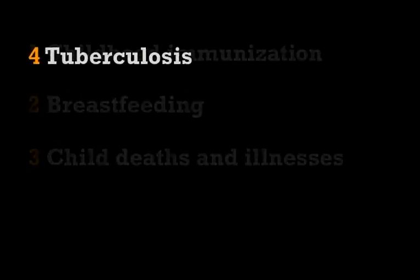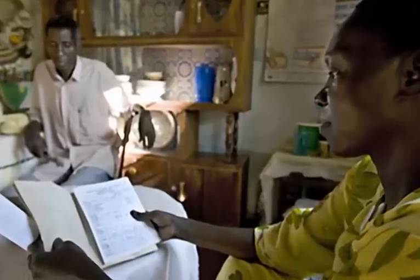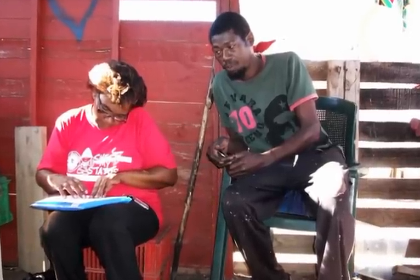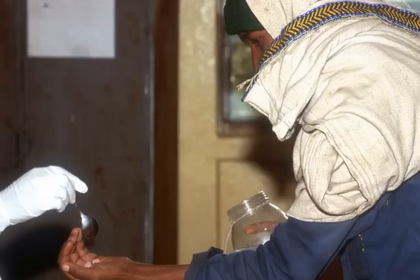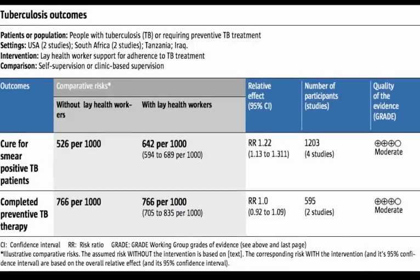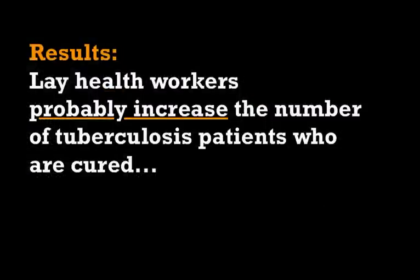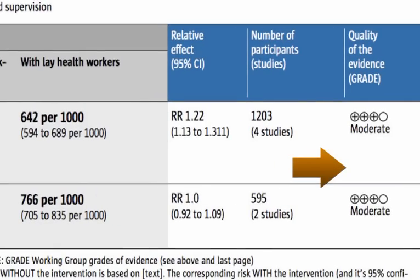The trials that focused on tuberculosis took place in a mix of high, middle and low income countries. In all these trials, lay health workers provided some sort of adherence support to people who were using medication either to cure tuberculosis or prevent it from developing. These patients were compared to patients who supervised themselves or who were supervised at health institutions. The results conclude that lay health workers probably have a small impact on the number of people who are cured from tuberculosis. However, they probably have little or no effect on the number of people who complete preventive treatment. We evaluated the quality of this evidence to be moderate.